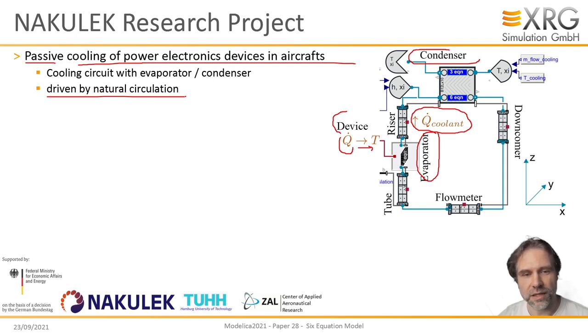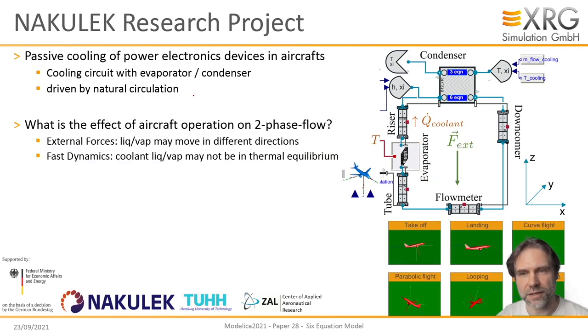Why should we do that? Well, if that works, you can potentially save a lot of mass by eliminating the compressor and some equipment, and eventually save maintenance effort. That sounds attractive, but the question is, is that reliable under aircraft operation conditions? Or rephrased, what is the effect of aircraft operation on two-phase flow?